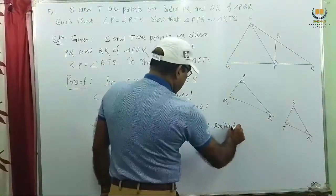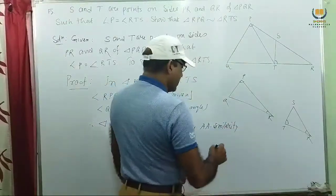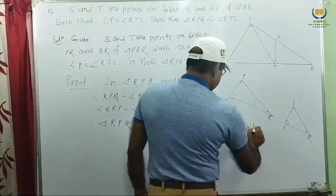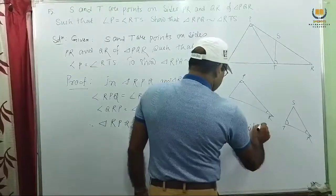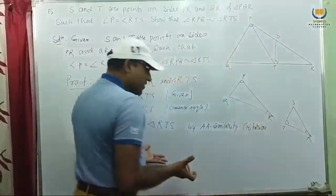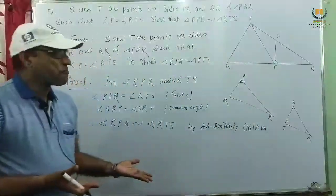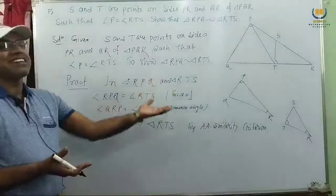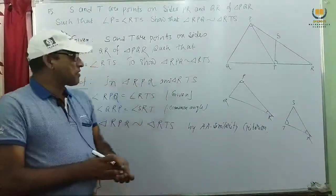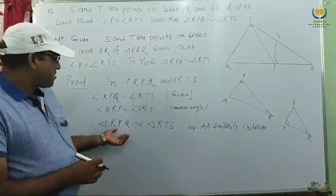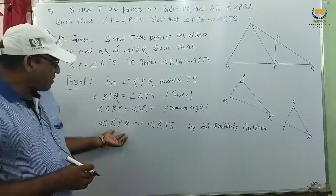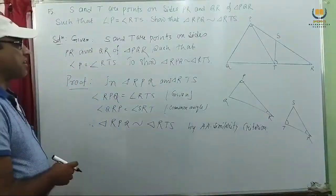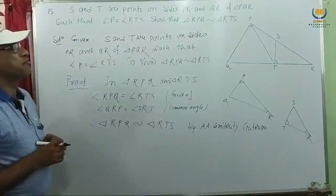These two triangles are similar by AA similarity criterion. So this is the proof — triangle RPQ and triangle RTS are similar. The proof is straightforward; we just start and get our answer.